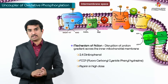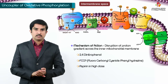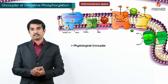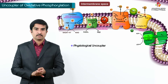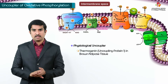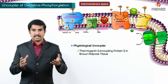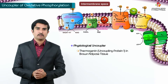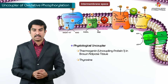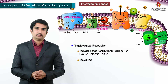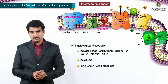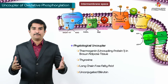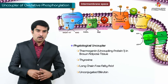Aspirin in high doses is also considered an important uncoupler. Beyond external agents, there are physiological uncouplers in the body. Thermogenin — also called uncoupling protein 1 — is located in brown adipose tissue and is responsible for thermogenesis. Thyroxine, long-chain free fatty acids, and unconjugated bilirubin also act as physiological uncouplers.